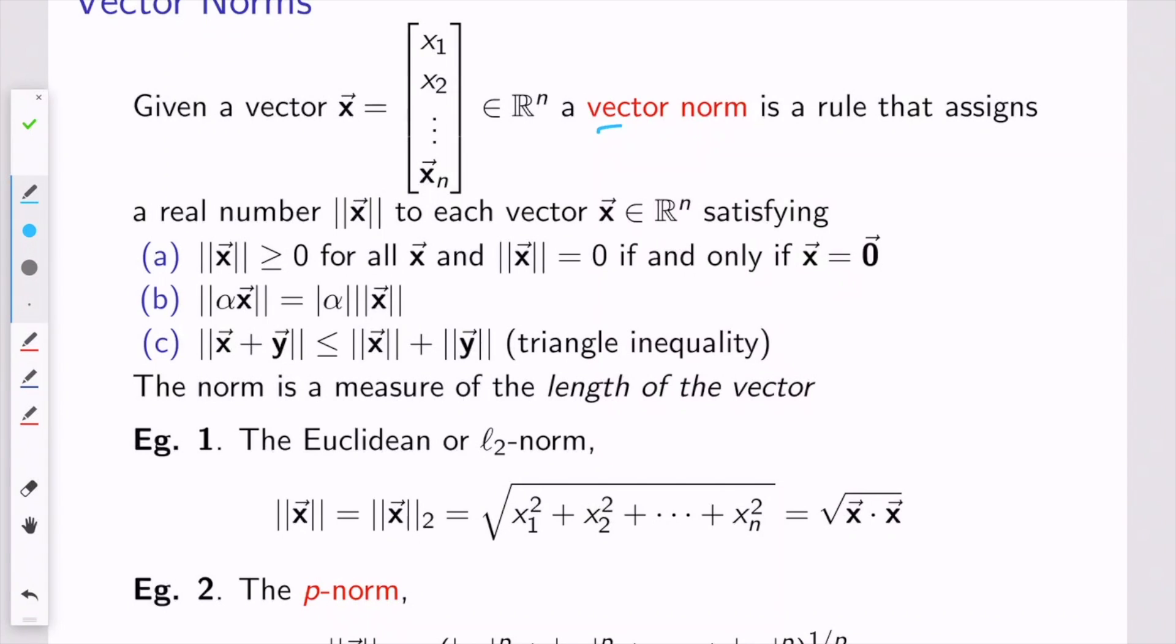All a vector norm is, is a rule that takes a vector, like this one here, and assigns a real number to it. There's some rules about that number. The norm has to be non-negative, and it should only be zero if the vector we're taking the norm of is the zero vector.